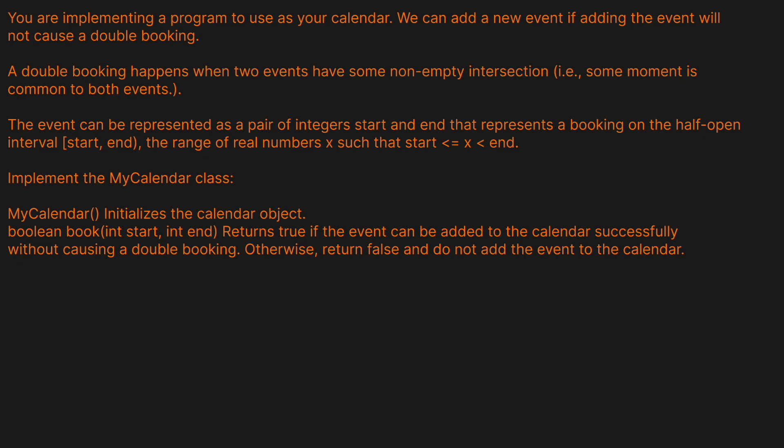You are implementing a program to use your calendar. We can add a new event if adding the event will not cause a double booking. A double booking happens when two events have the same non-empty intersection — some moment is common to both events. The event can be represented as a pair of integers start and end that represents a booking on the half-open interval start to end, where start is inclusive and end isn't.